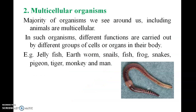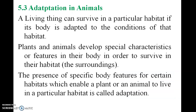There are so many multicellular organisms. The majority of the organisms we see around us, including animals, are multicellular. Different functions are carried out by different groups of cells or organs in the body. Now let us look at adaptation in animals — living things can survive in a particular habitat if they are adapted to the conditions of that habitat.